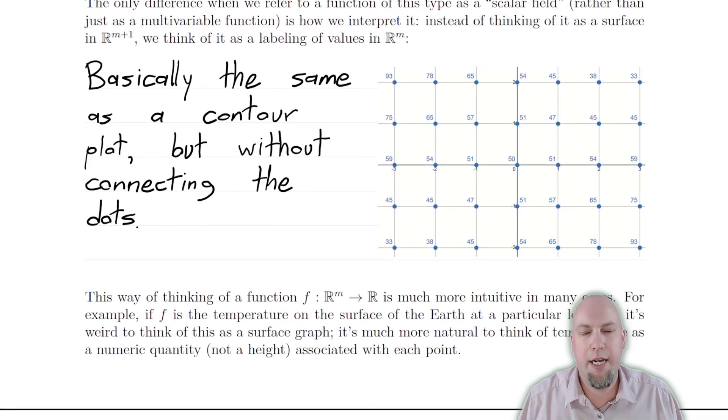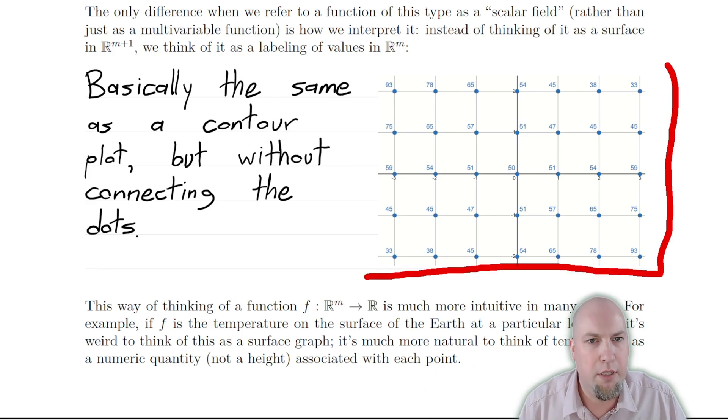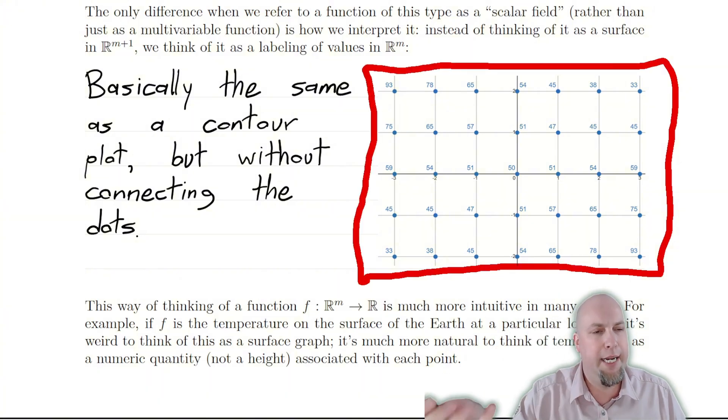In practice, though, in vector calculus, we're usually not going to think about them like that. We're going to think about scalar fields slightly differently. We're going to think of them as just you've got this input space. So for example, if m is two, our input space is two dimensional. And what we're going to do is just assign numbers to each of those—the number we assign is just the function value at that point.